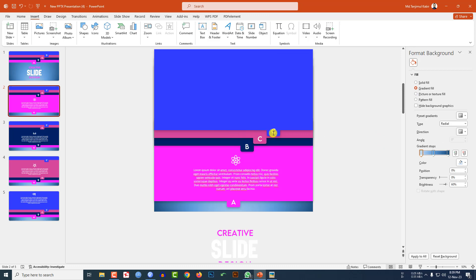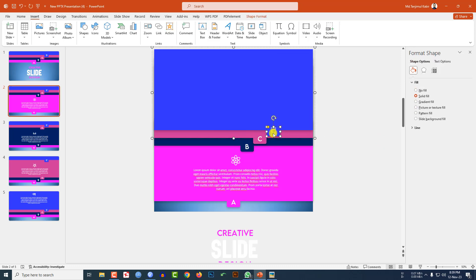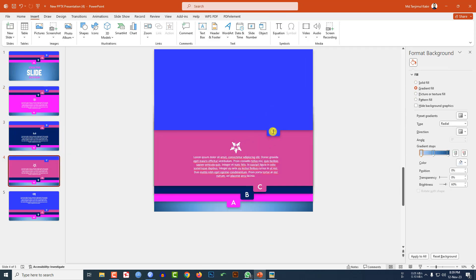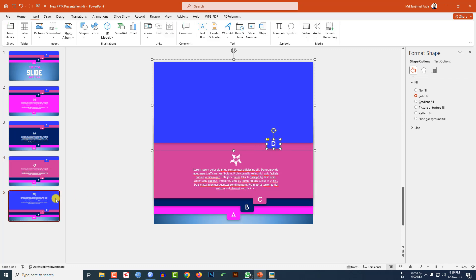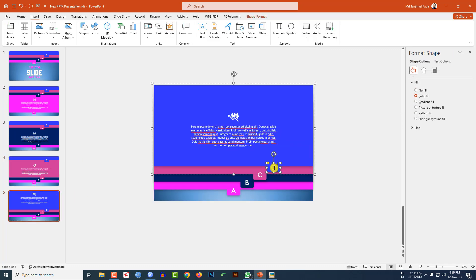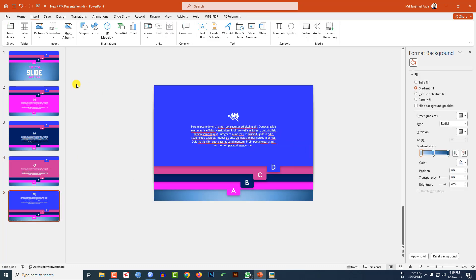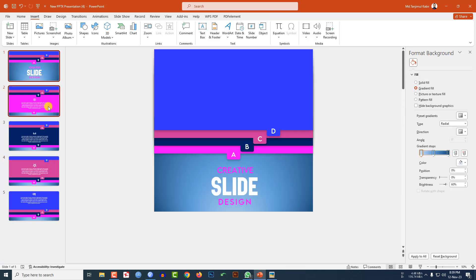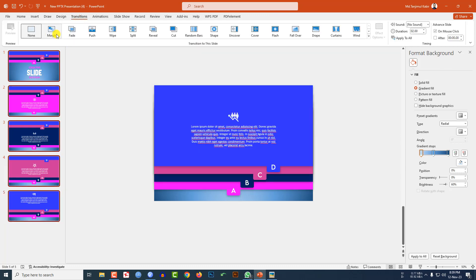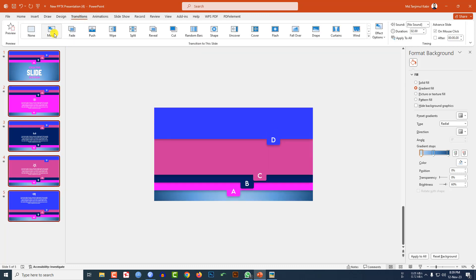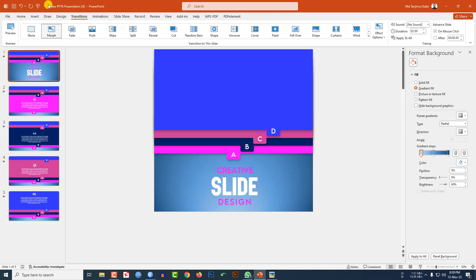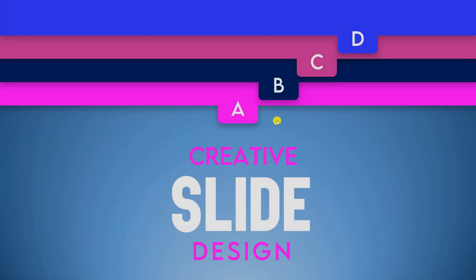Update the labels to D on this slide as well. Now select all slides, go to Transition, and click Morph. Let me watch the slideshow from the beginning.